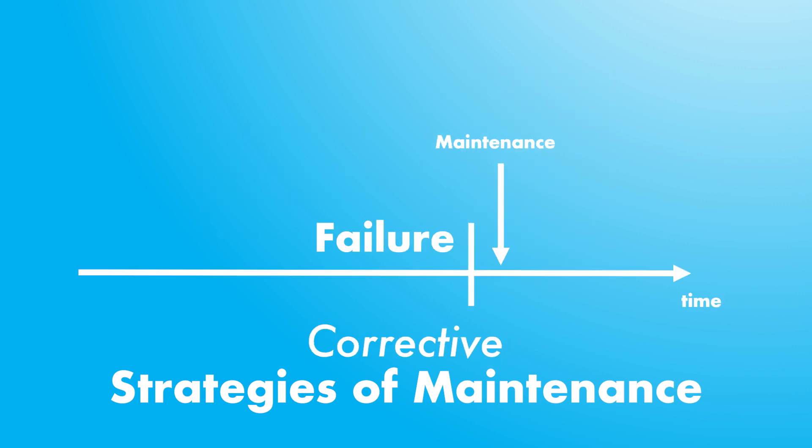Corrective or reactive strategy may sound like a no-strategy strategy, but it is a real approach — we wait for things to fail before doing a maintenance action. This type of strategy should only apply to non-costly, easy-to-replace, hard-to-inspect components with low criticality, such as a light bulb or a coffee machine.